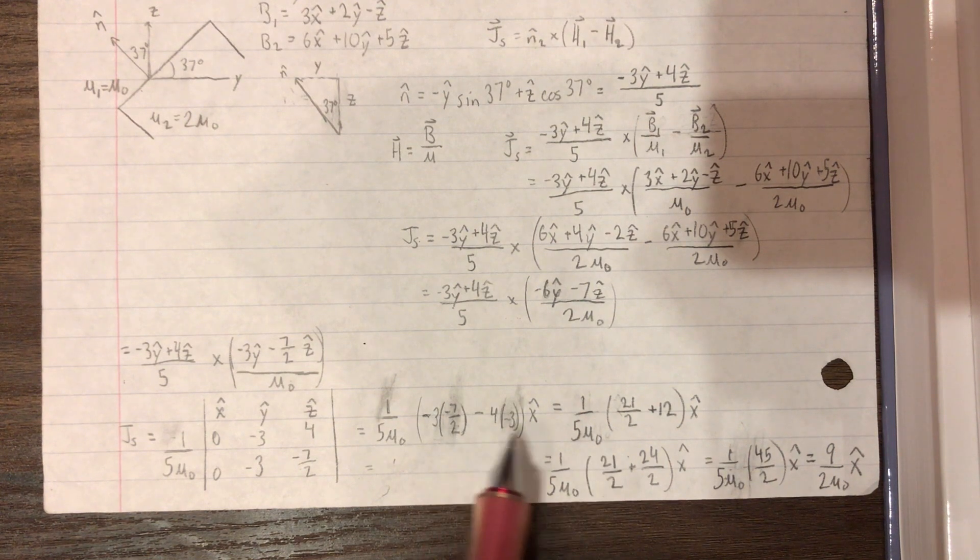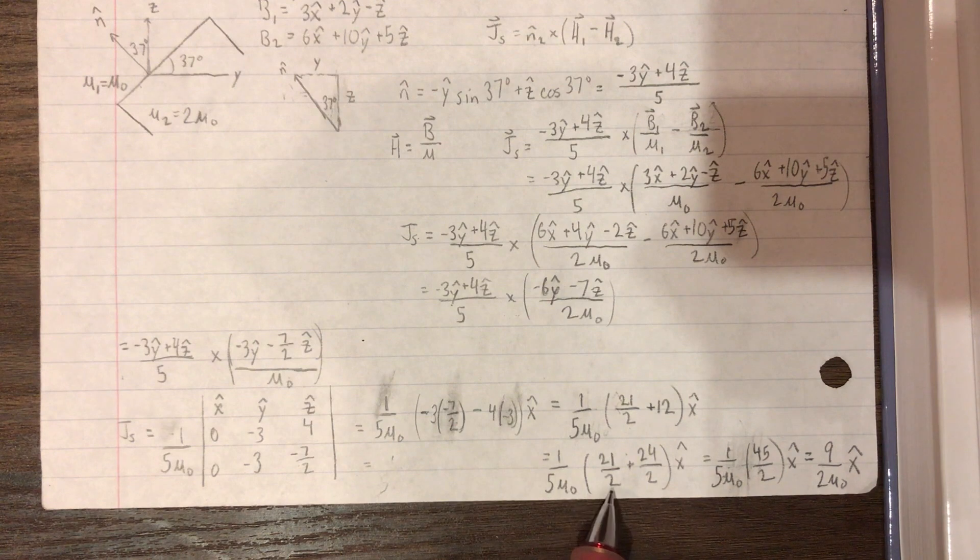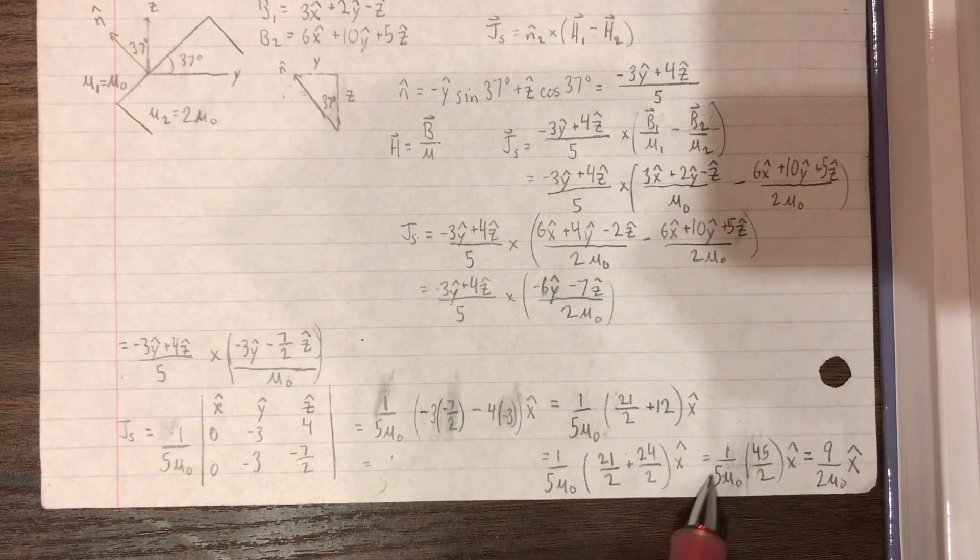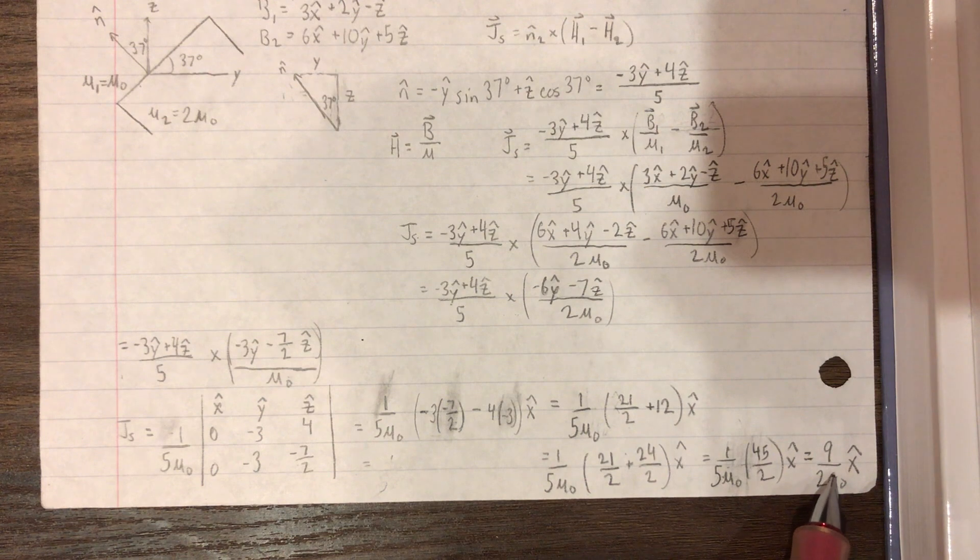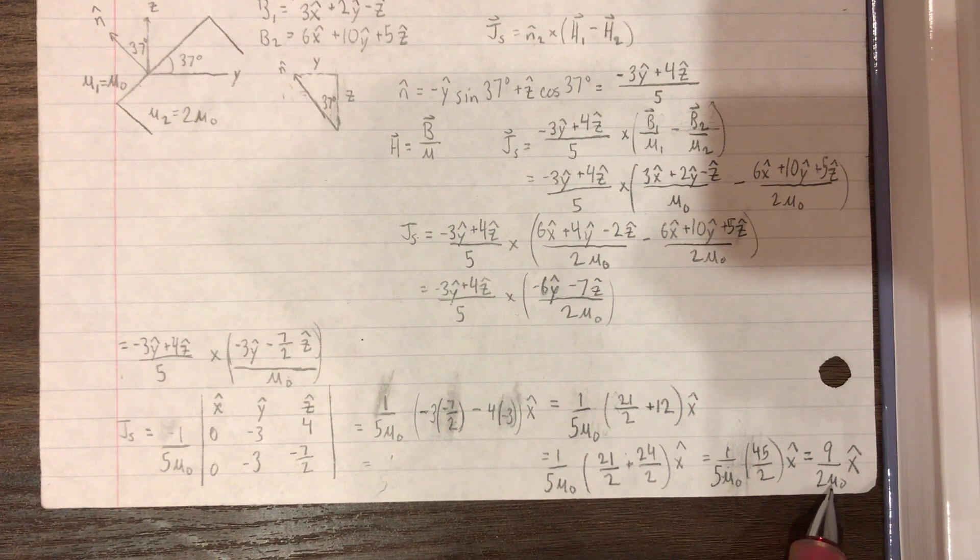And then simplifying this, 21 over 2 plus 12, keep simplifying. To add it up, we get 45 over 2. You can cross out with that 5. So you finally simplify to 9 over 2 mu0 x hat, which is our final answer.